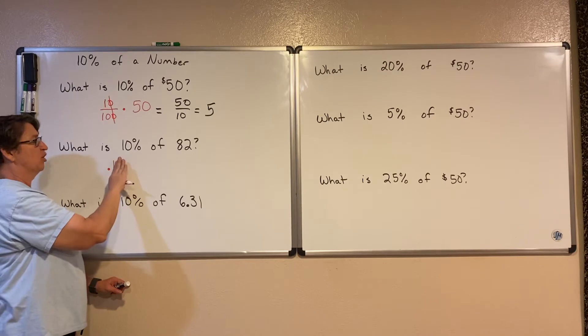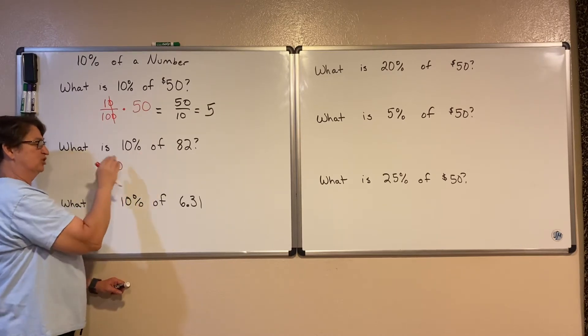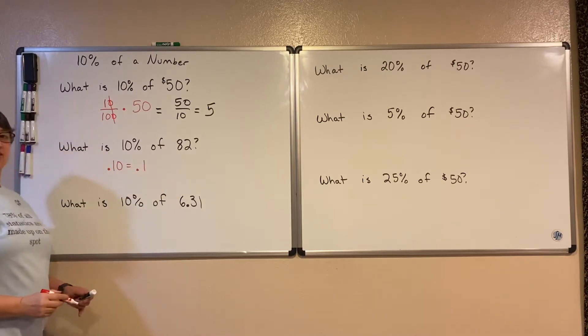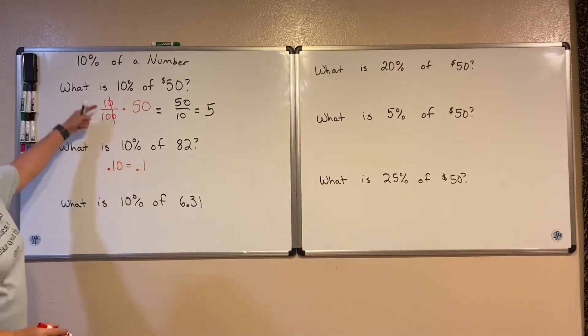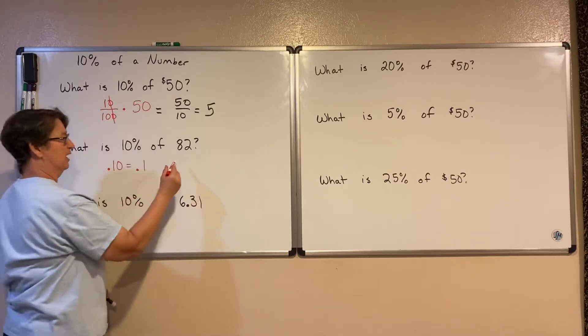But that 0.10, remember anything, any zero after the last significant number after a decimal, we can do away with. So 10% could just be written as 0.1. I'm going to take that 1/10, or 10 hundredths, and I'm going to multiply it times 82.